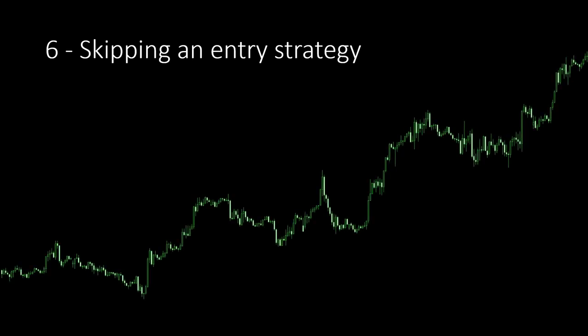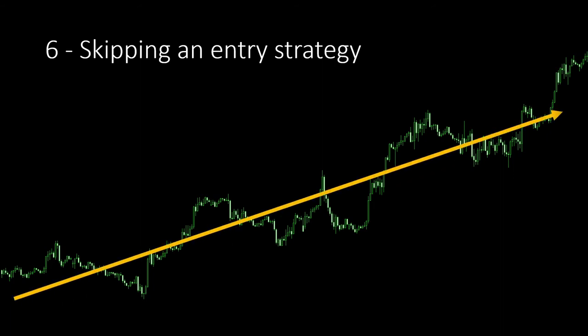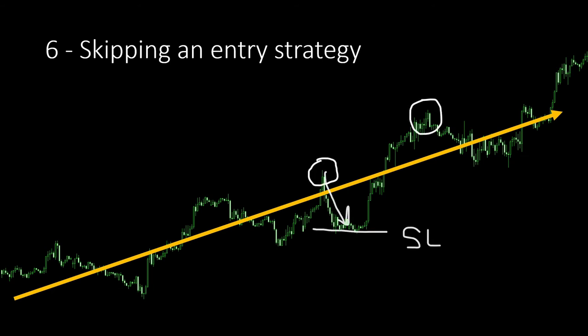Mistake number six: relying only on the model's trend prediction and skipping an entry strategy. Even if your model delivers good predictions, you still need to define a market entry strategy — knowing the best moment to execute an order. For example, even if your model correctly predicts an uptrend, executing buying orders at the wrong moment could get you caught by your stop-loss before hitting your take-profit, and you wouldn't get the expected results.